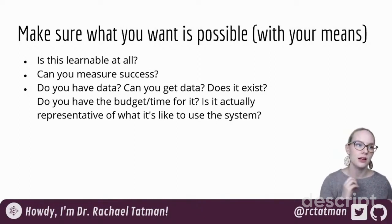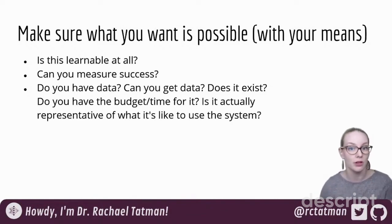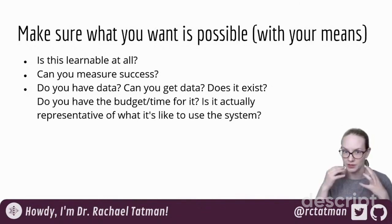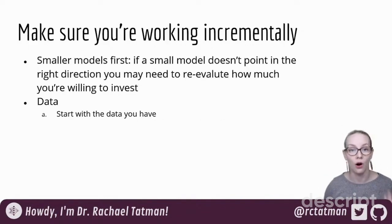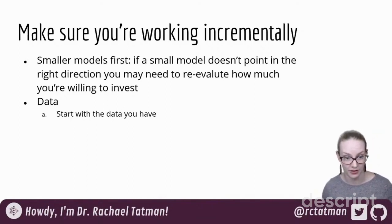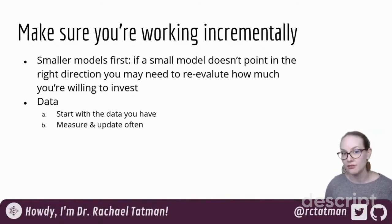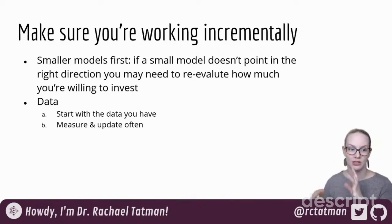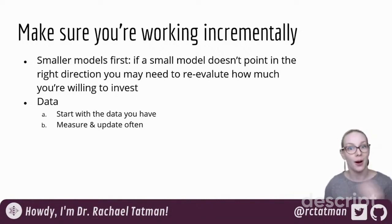Is the data you can get representative of what the system is going to see when it's in production? Presumably you're building something you want to use in a certain situation. Start with what you have before collecting a whole bunch of other data. Measure and update often — does the data your model has seen still match the distribution of data being shown to it in production? Are you updating as you get new data?